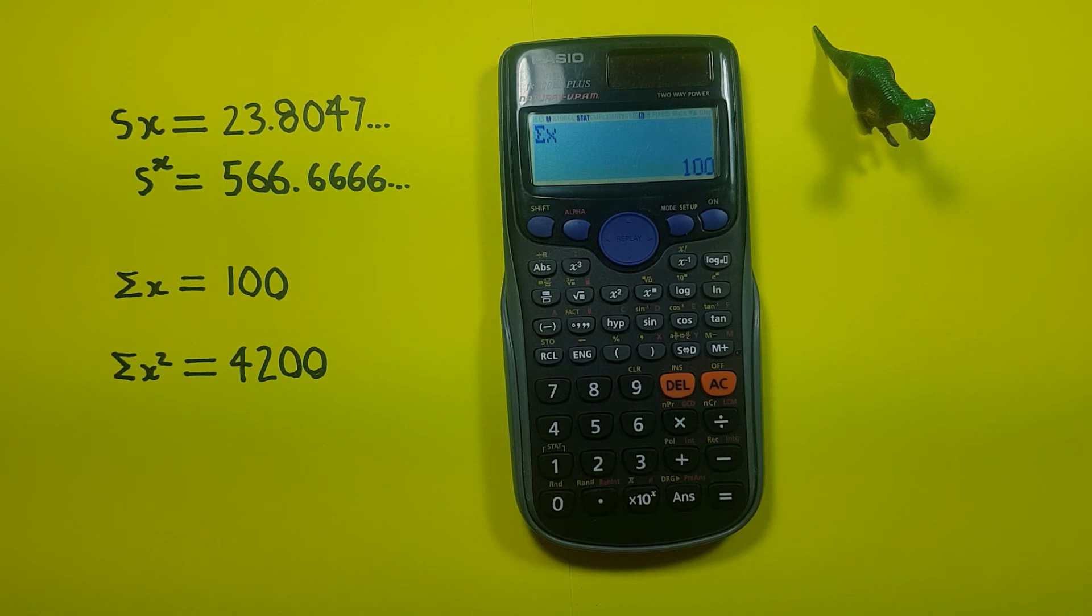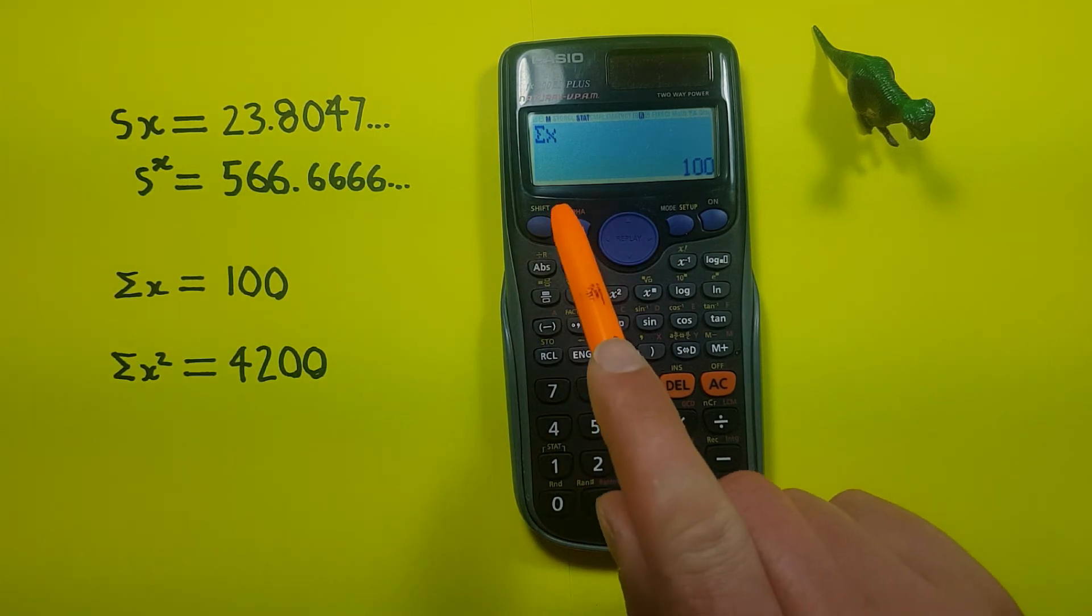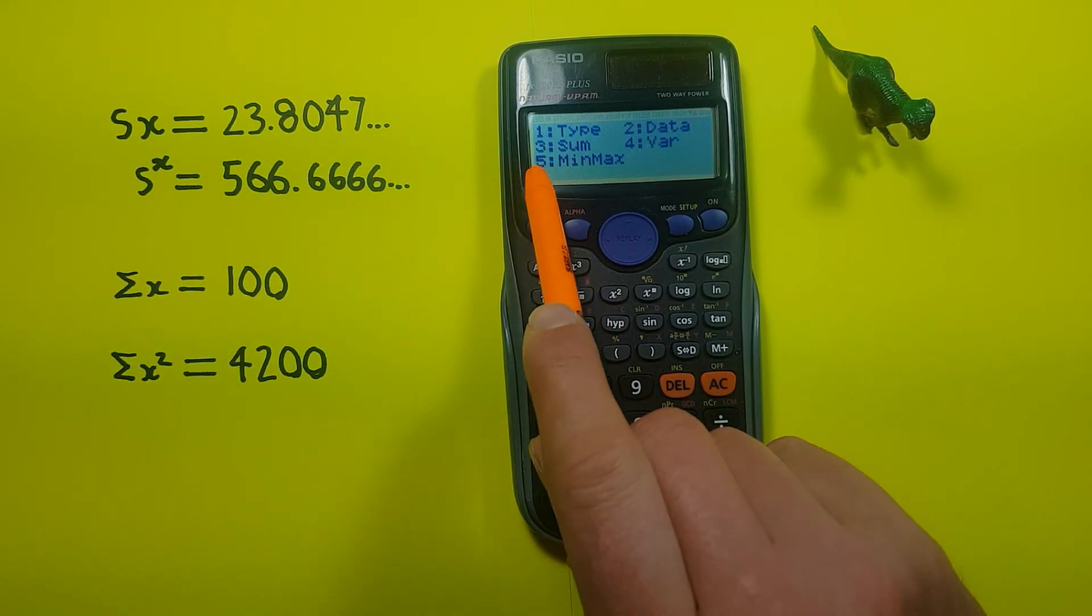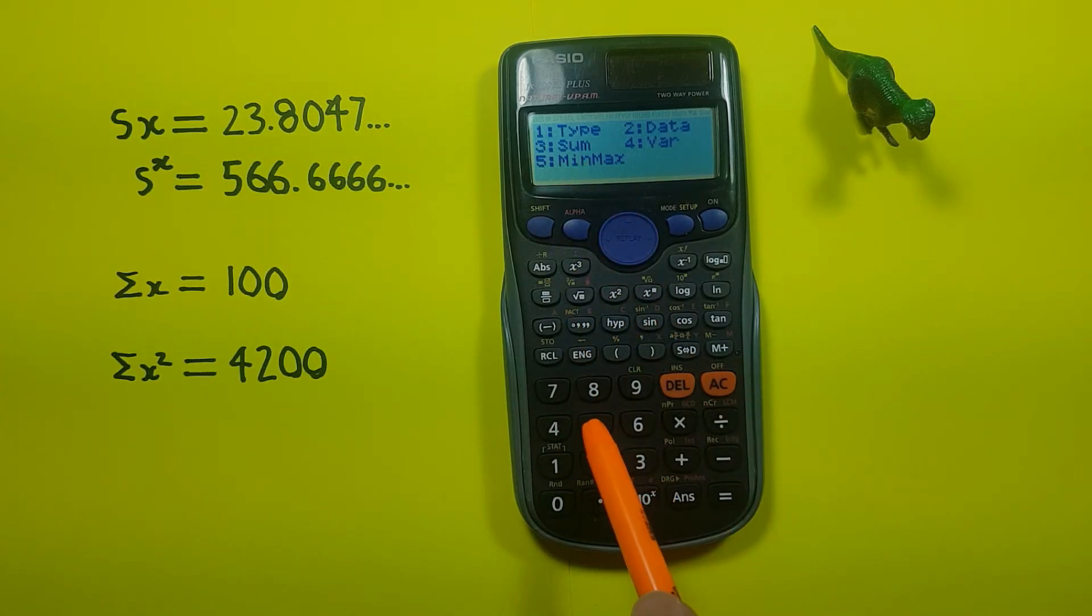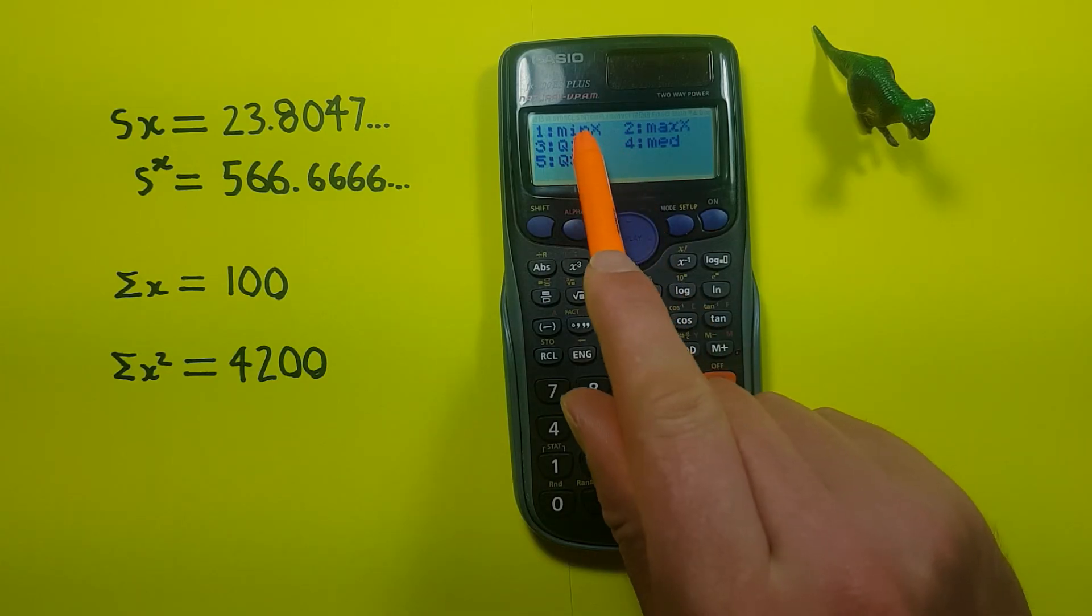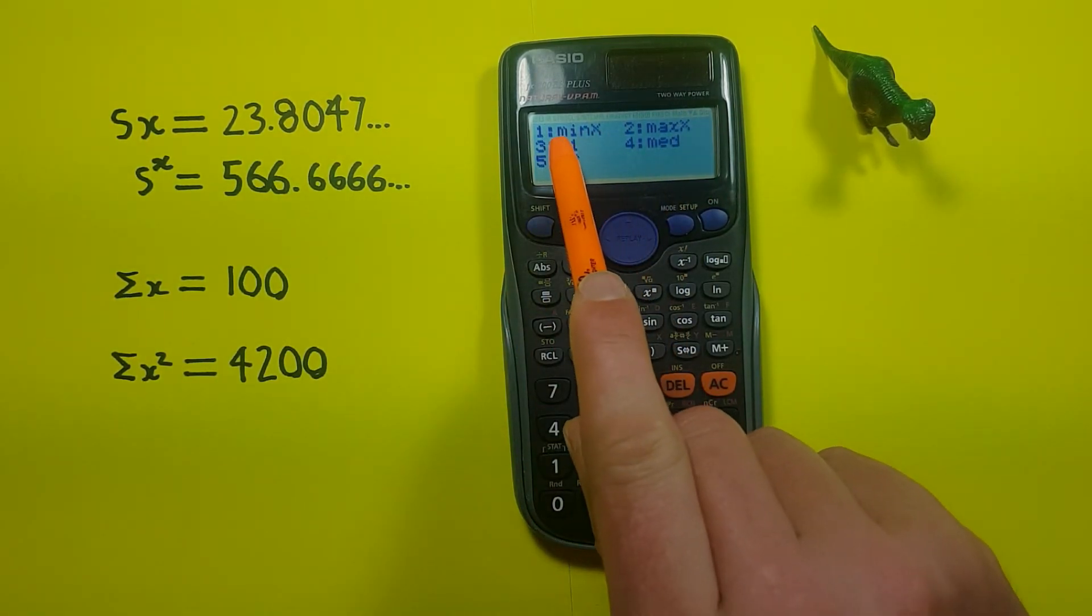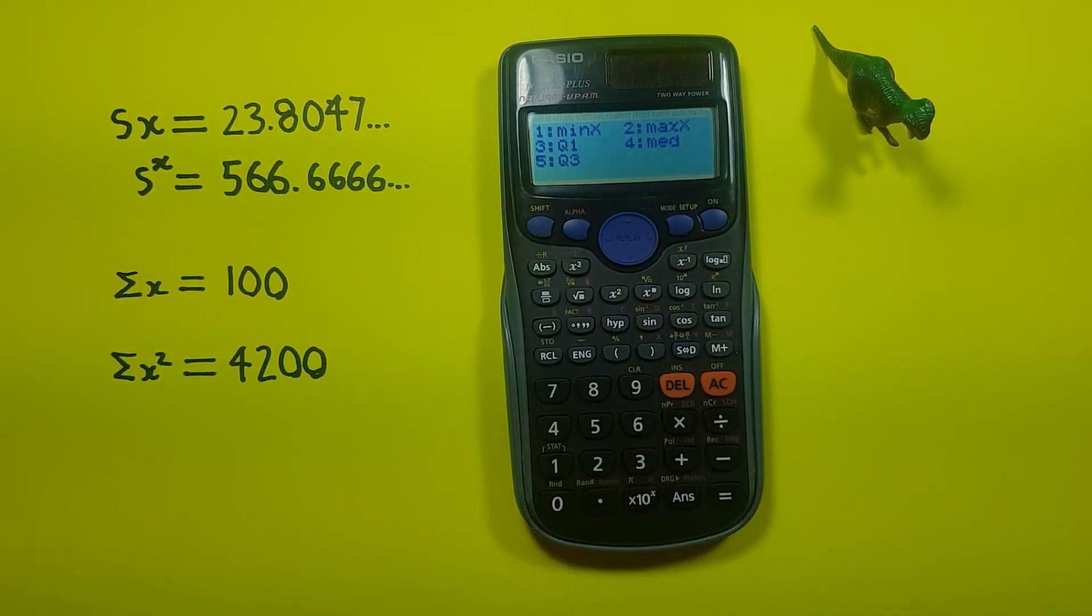In the stats menu, you can also find some min max values if you go into number 5 here. You get your minimum x, max x, your first quartile, your median, and your third quartile here.